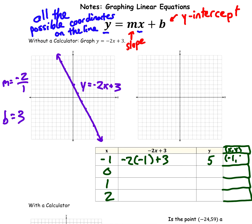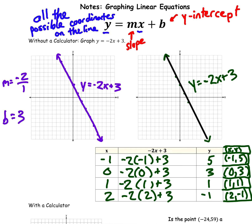So plugging in negative 1: negative 2 times negative 1 plus 3 equals 2 plus 3, which is 5 — giving the point negative 1 comma 5. Plugging in 0: negative 2 times 0 plus 3 equals 3 — giving the point 0 comma 3. Keep doing this with all x values in the table. You can choose any x values, as long as they're plottable on the coordinate plane. Go ahead and finish that out, graph the line. The line should have arrows at the end, go all the way through the graph, and be labeled.